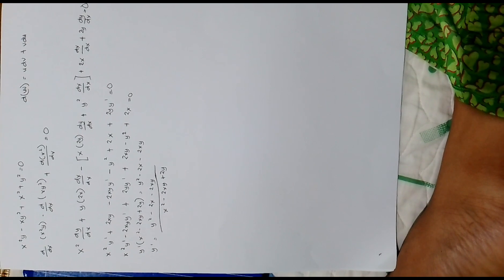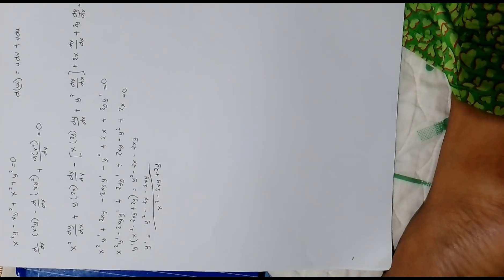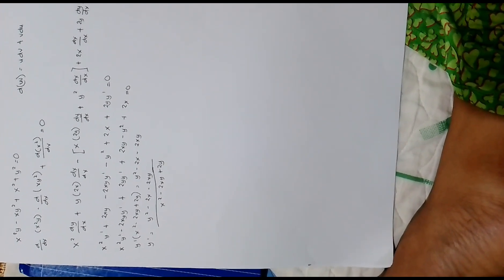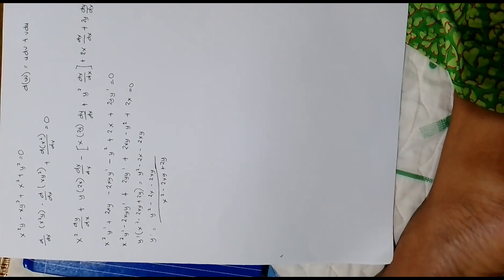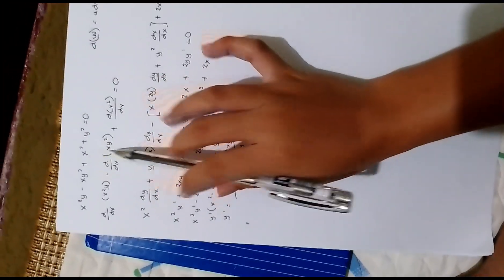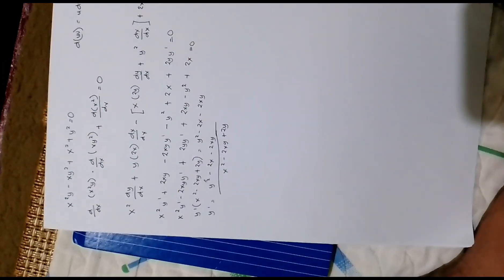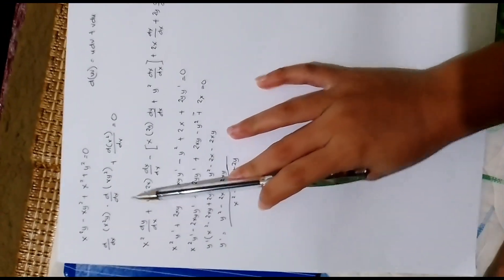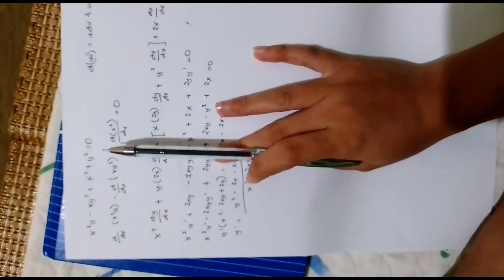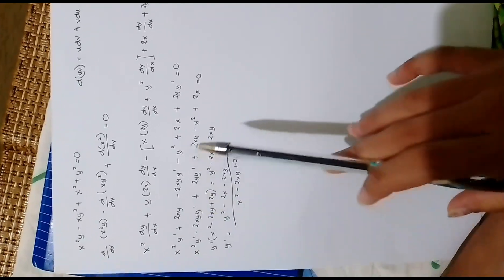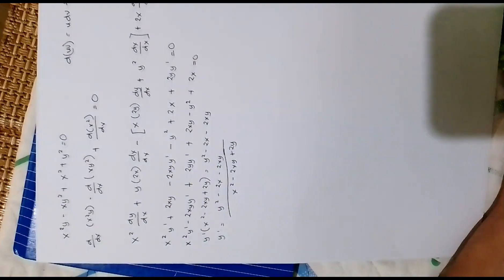Good day everyone. Today I will discuss implicit differentiation. An implicit function is a function that can be expressed in both x and y. As you can see, it cannot be easily expressed in terms of y because you cannot separate the variables.